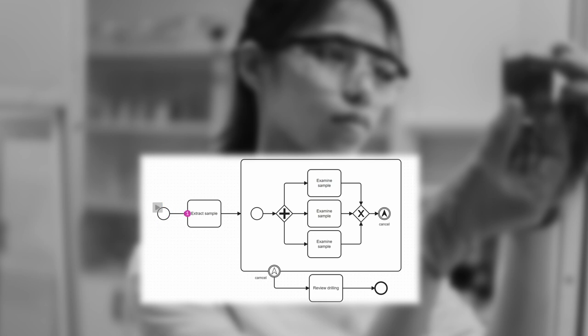After the extract sample task has completed, parts of the sample are sent to three distinct laboratories for examination. Once the first of these laboratories completes the sample analysis, the other two task instances are cancelled and the review drilling task commences.